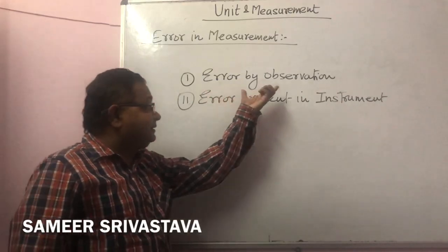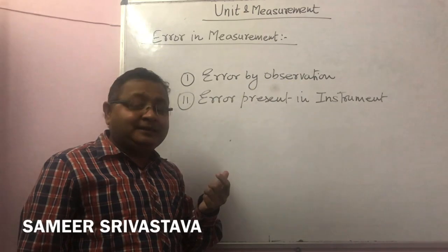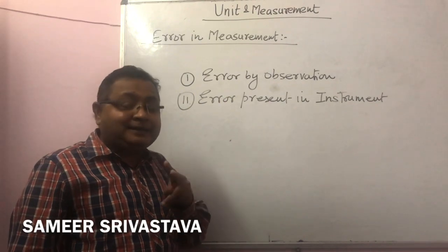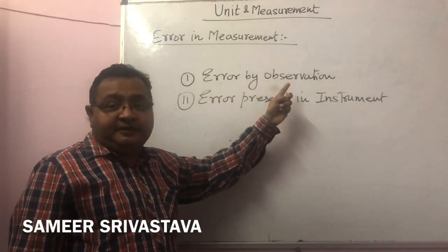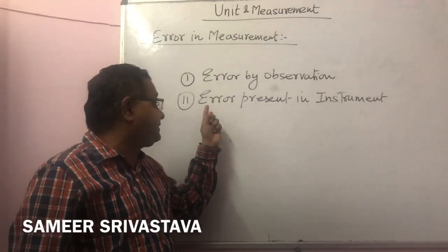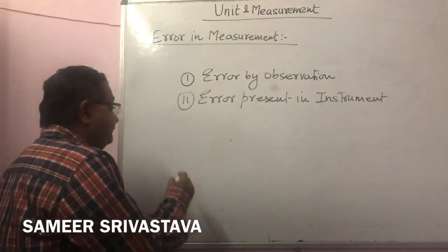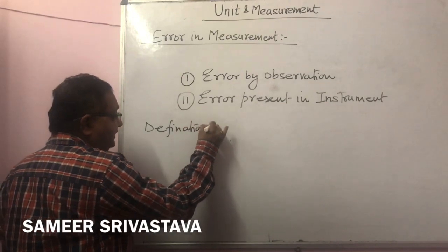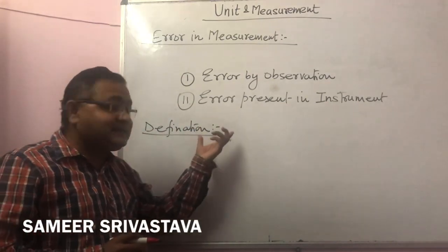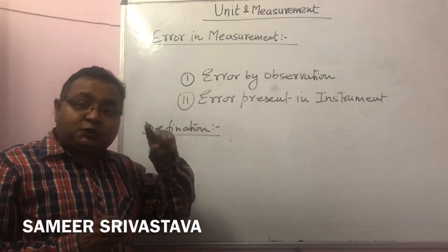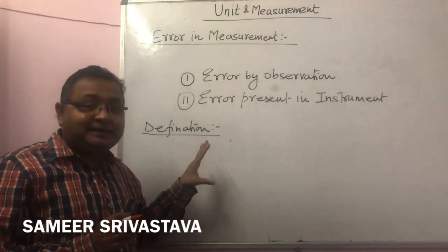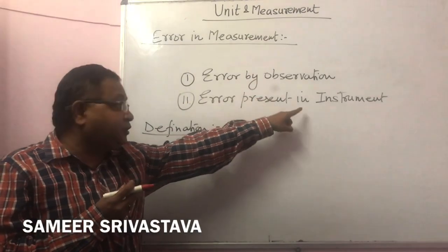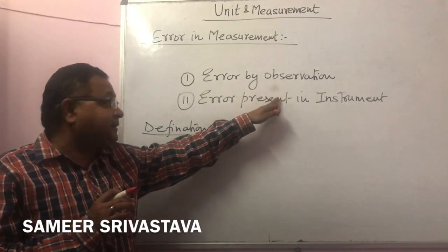So, error — when we do any experiment or any measurement, the error comes by two ways: either by observation, or there is some error present in an instrument. How we can define the error? It is the uncertainty of measurement, which is called as Error. It is an uncertain case, generated due to observation or by any error present in an instrument.